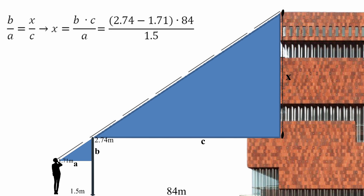So in this case x is equal to 58 meters. Finally you add the height of the pole — 2.74 meters — to x to get your final result of 61 meters.